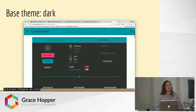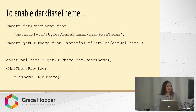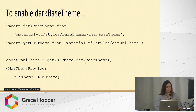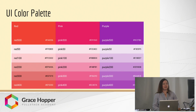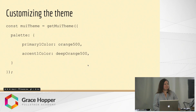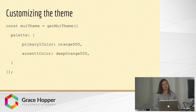Another theme you can get without doing much work is the dark theme, and it will look like this. It's very easy to add — you just import a method called getMuiTheme and provide the dark base theme to it. You can also customize other colors. On their website you'll see a color palette you can use, and each color comes with a name you can import in your app. So for example, I wanted to use orange500 and deep orange500 in my theme.